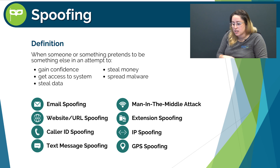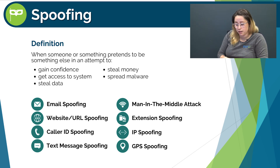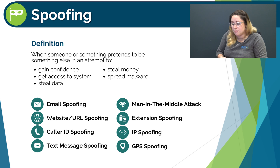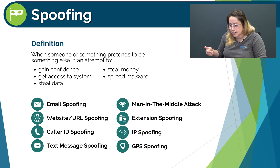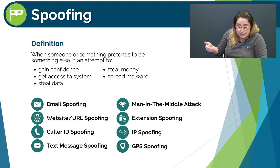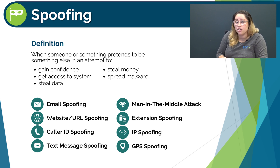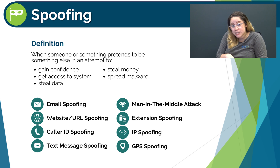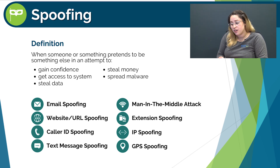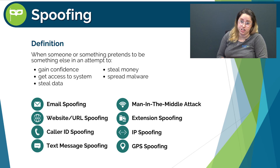Extension spoofing occurs when a cybercriminal disguises an executable malware file. For example, a cybercriminal could name an executable file filename.txt.exe. Since file extensions are often hidden by default in Windows, the file would appear as filename.txt. Lastly, we have IP spoofing and GPS spoofing, which are similar in that they disguise or hide the location of a device or transmission.